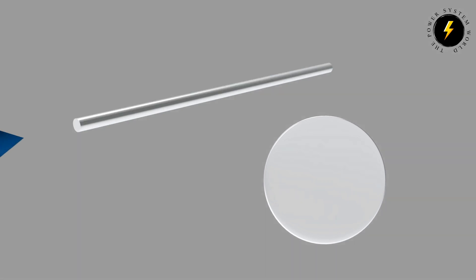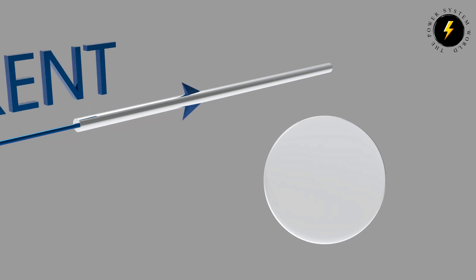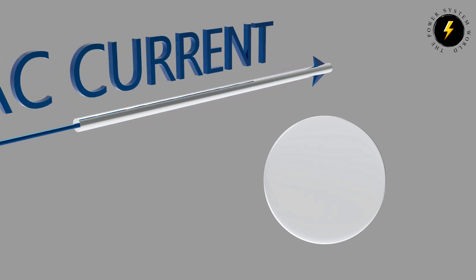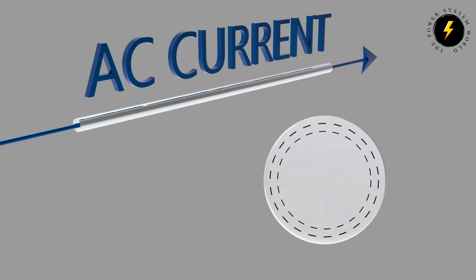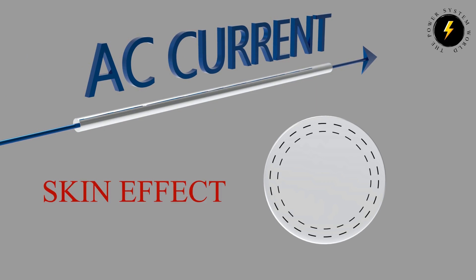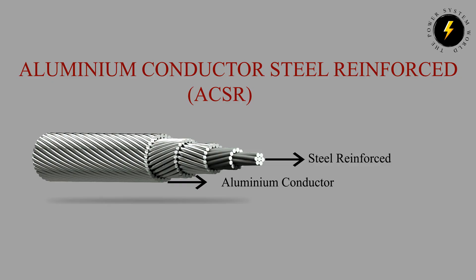When an AC current flows through a solid conductor, the current distribution is more near the outer region than the inner region of the conductor. This non-uniform distribution of current is known as the skin effect.